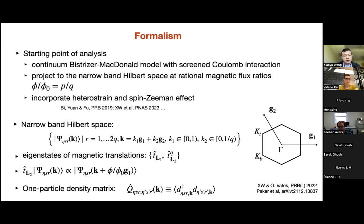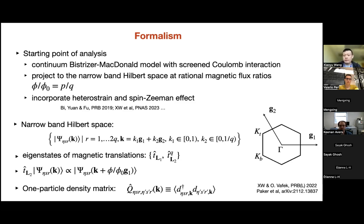In this procedure we can probe certain translation symmetry breaking states. The key object in Hartree-Fock is the one-particle density matrix, which we call the Q matrix, and we will be using this extensively to discuss the phases we are probing.